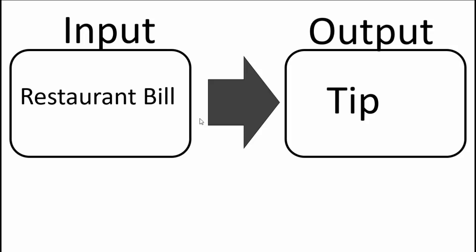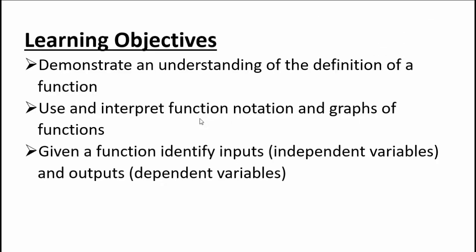So when you define function mathematically, you would need to have a word input and output in it. At the end of this section, you should be able to demonstrate understanding of the definition of a function. We will also teach you how to use and interpret function notation and graphs of functions. Given a function, identify input, which is independent variable, and output, which is the dependent variable. So those are our learning objectives.